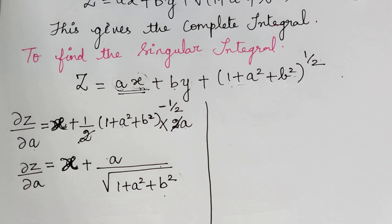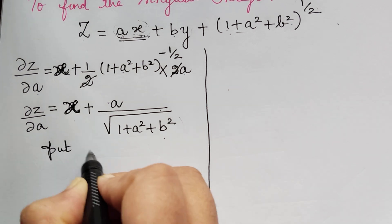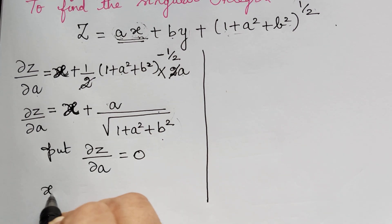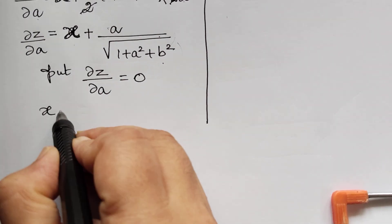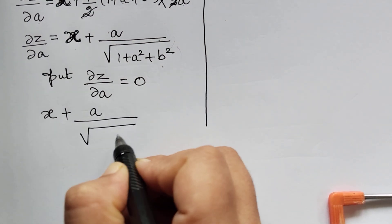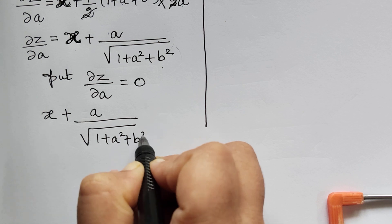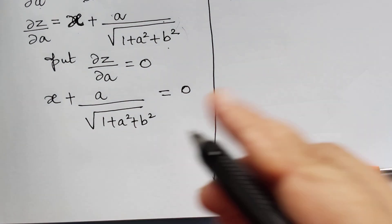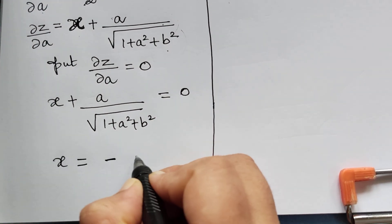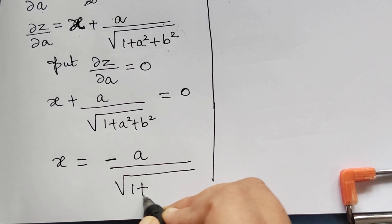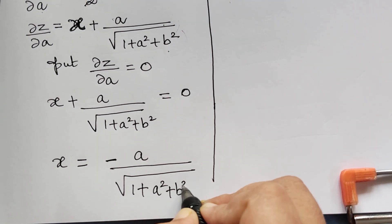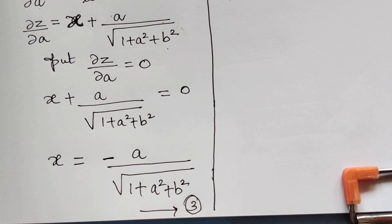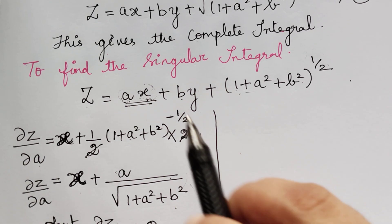Setting ∂z/∂a = 0, we get x + a / √(1 + a² + b²) = 0, which gives x = -a / √(1 + a² + b²). Let us mark this as equation 3.